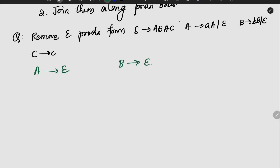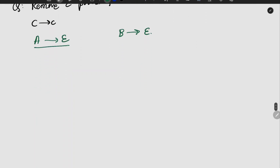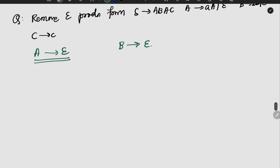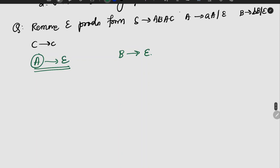To remove epsilon productions, we substitute for A wherever it appears. For example, if A gives epsilon, we substitute: S gives a b a c, and A gives b c. We also substitute a, b, c and b, c accordingly.